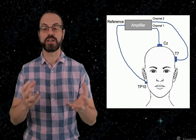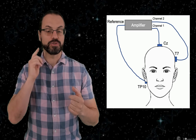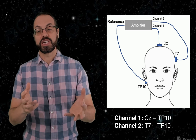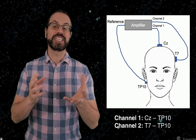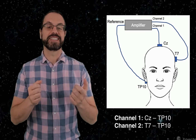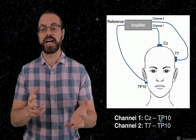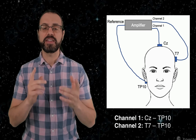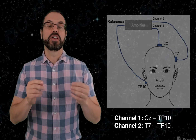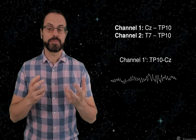So let's assume we are recording channels CZ and T7 with respect to reference TP10, which is on the right mastoid behind the ear. Channel 1 is the potential of CZ minus TP10, and channel 2 is the potential of T7 minus TP10. Imagine we want to compare with another study that used CZ as a reference. Even though we did not use CZ, we can use simple math to compute the potential of T7 and TP10 as if we used CZ as a reference. For the first channel, it's easy — we can just compute the opposite. So instead of CZ minus TP10, we have TP10 minus CZ. We take the opposite as shown here to get T7 with reference to CZ.